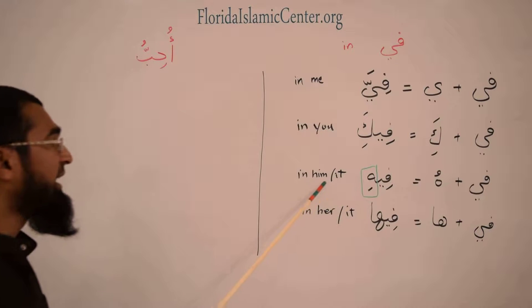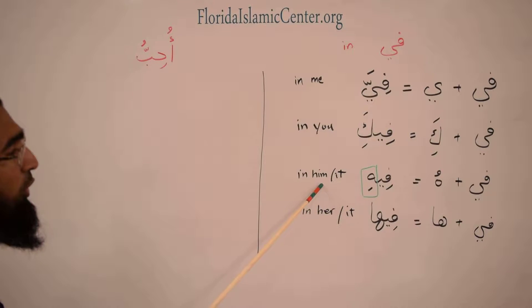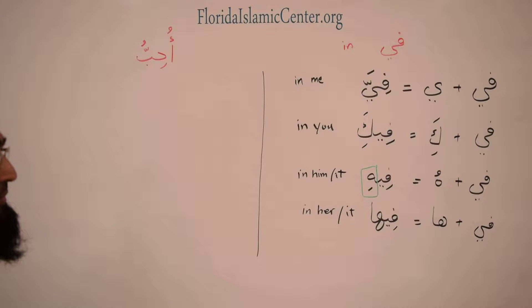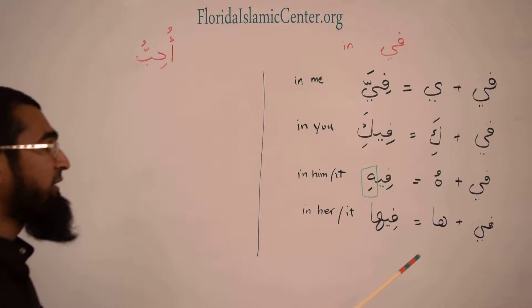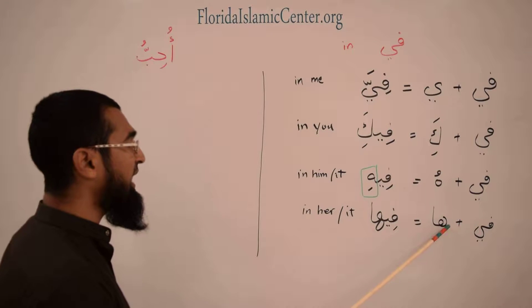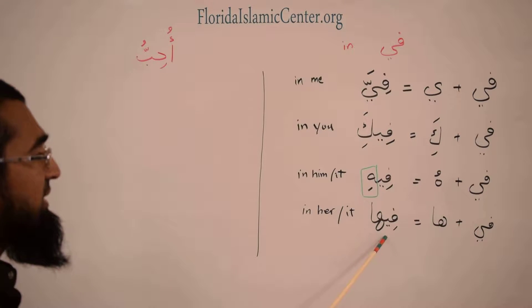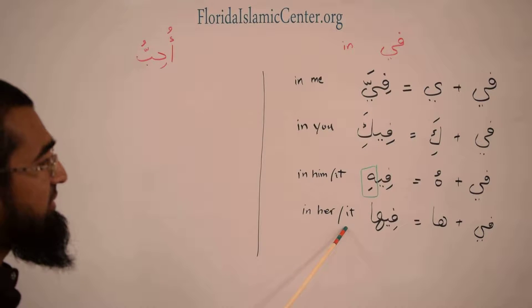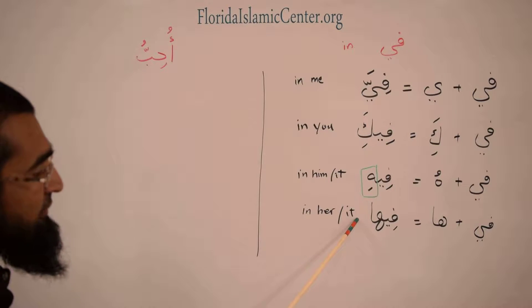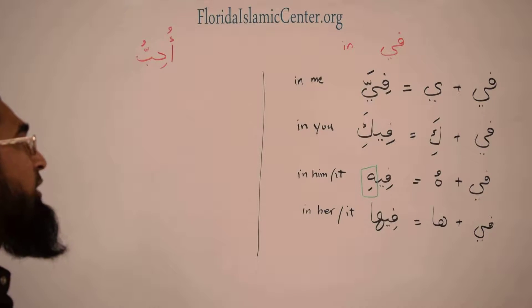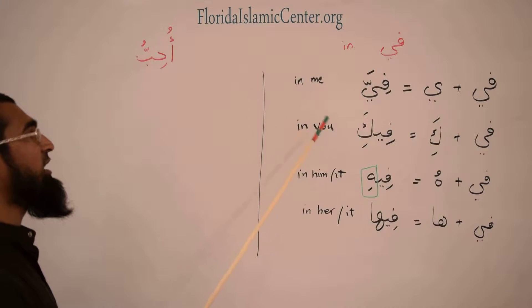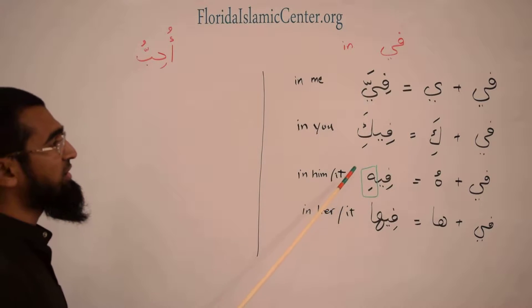فيه means 'in him' or 'in it' — it's masculine. في plus the ha is going to be فيها, meaning 'in her' or 'in it' — that's feminine.